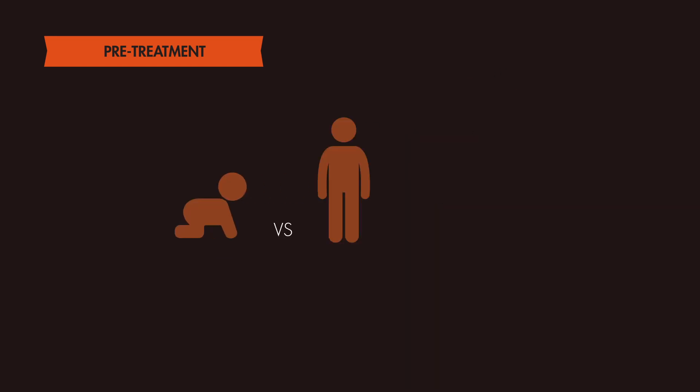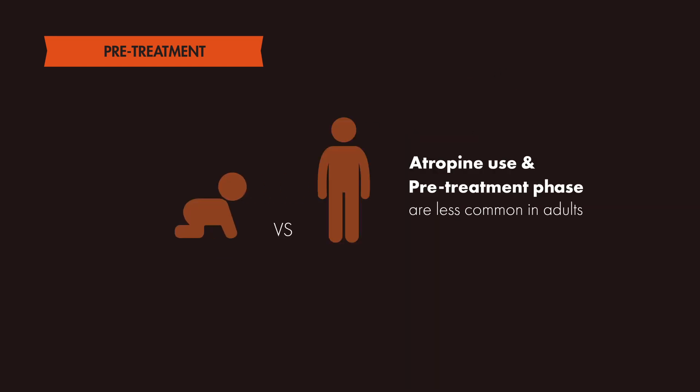This is in contrast to the adult population, where atropine is rarely used during RSI except for unrelated and independent cases of bradycardia that occur peri-intubation. In fact, the entire pretreatment phase is less common in adults when compared to the pediatric population.